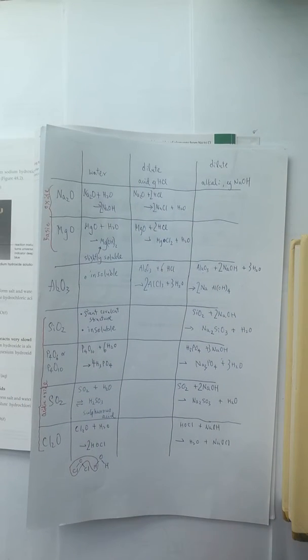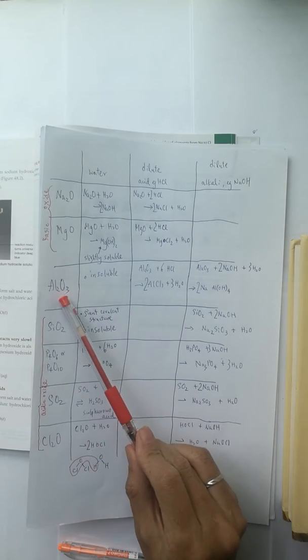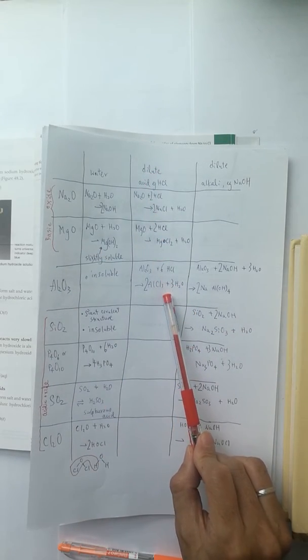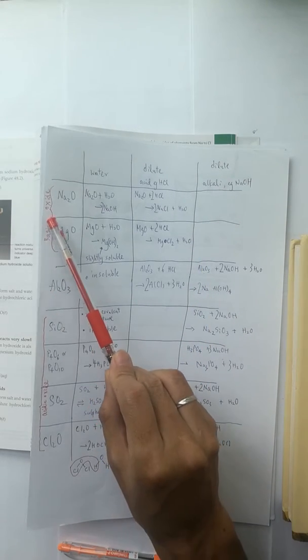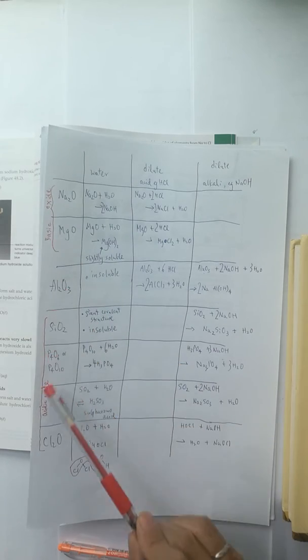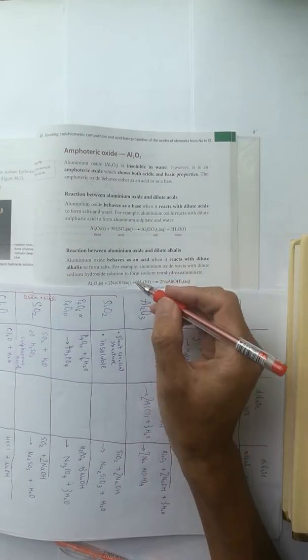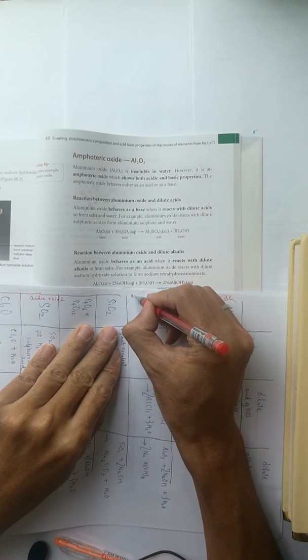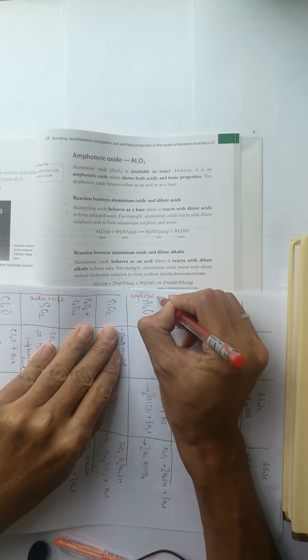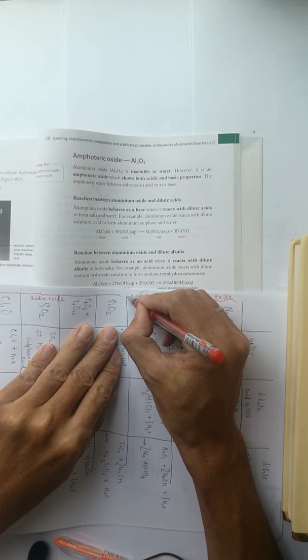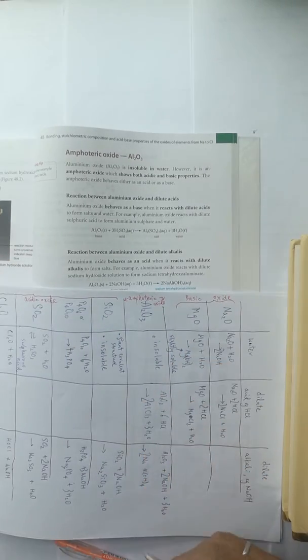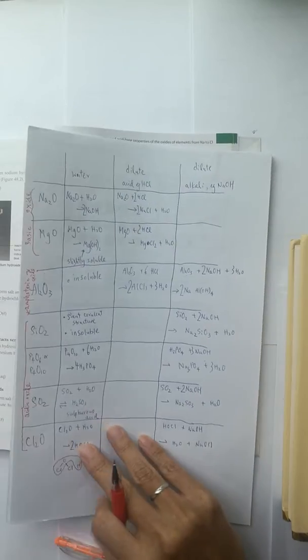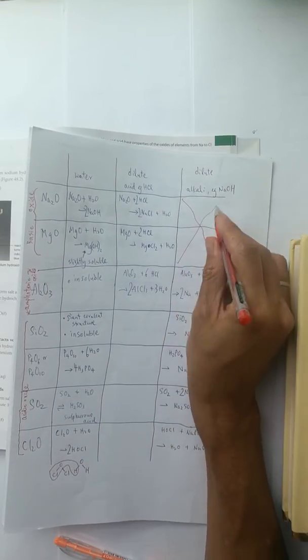So, for the Aluminium Oxide, it reacts with acid. And it reacts with alkaline. It works like basic oxide as well as acidic oxide. So, we call it Amphoteric Oxide. For the box which is empty, we call it Amphoteric Oxide.